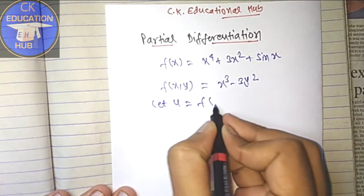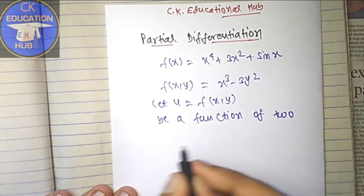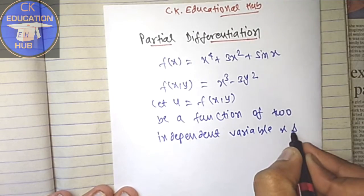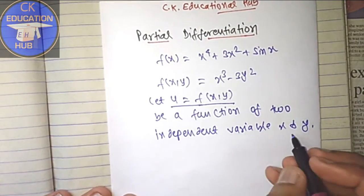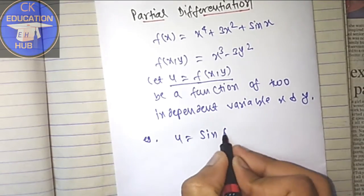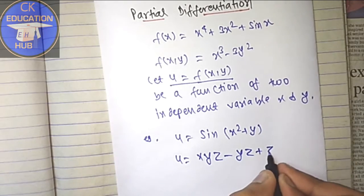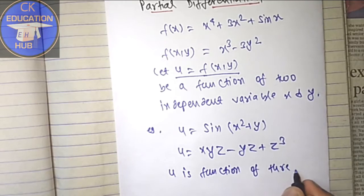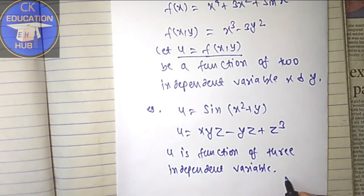Let u = f(x,y) be a function of two independent variables x and y. Here u is the function of f(x,y), and x and y are the independent variables. For example, u = sin(x² + y), or u = xyz - yz + z³, where u is a function of three independent variables.